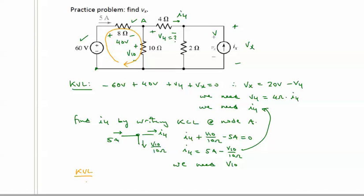We know the 60 volts, and we've calculated that that 8 ohms has 40 volts. So with those two voltages, I can find V10. Let's write KVL. It's minus 60 plus 40 volts plus V10 equals zero. So therefore, V10 equals 60 minus 40, or 20 volts.